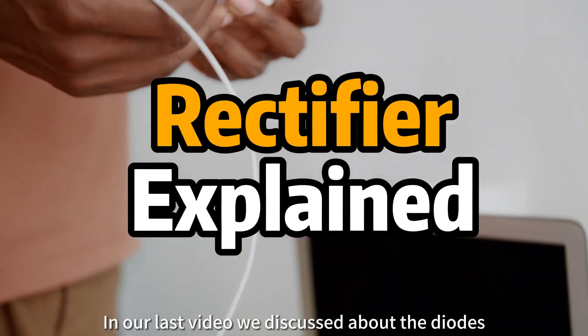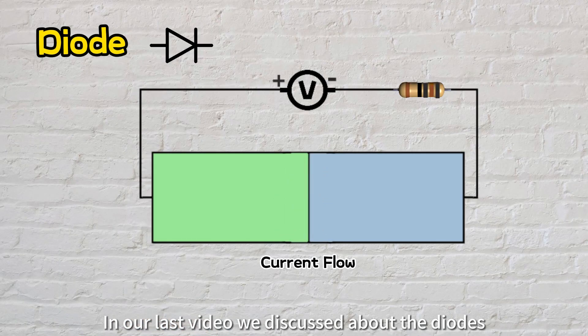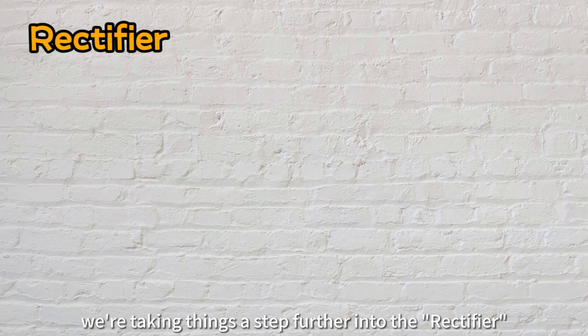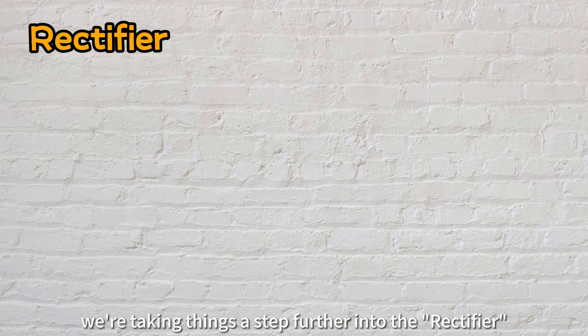Hey everyone! In our last video, we discussed diodes, those tiny semiconductor devices that allow current to flow in one direction. But today, we're taking things a step further into the rectifier.